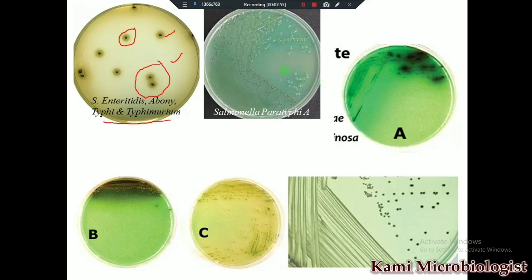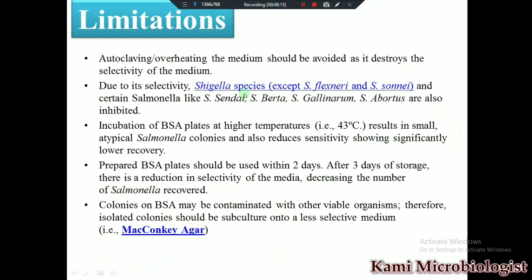It doesn't mean that when you get a black colony you can automatically say it is Salmonella enteritidis — it could also be Salmonella abony, typhi, or typhimurium. To confirm 100% what type of colony it is, you have to perform Gram staining and API 20 tests as well as different biochemical tests. The green colorless colonies shown here are Salmonella paratyphi, followed by Klebsiella and Pseudomonas growth images.